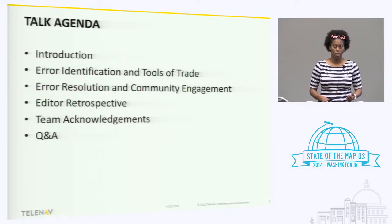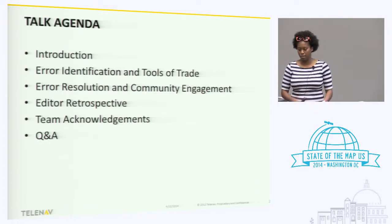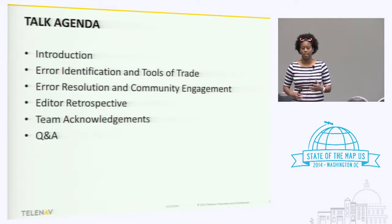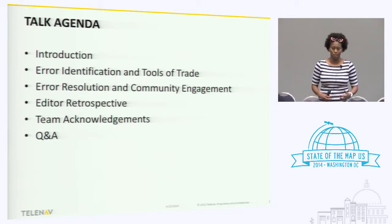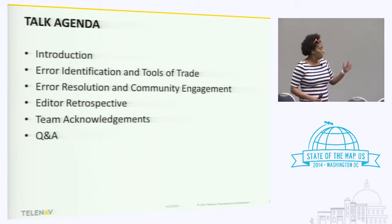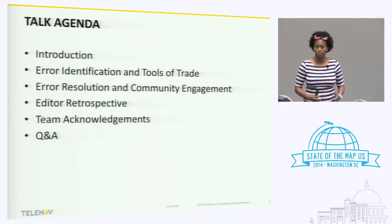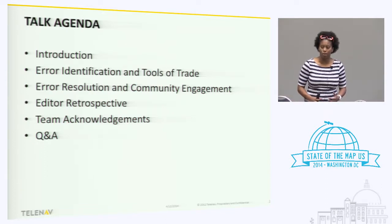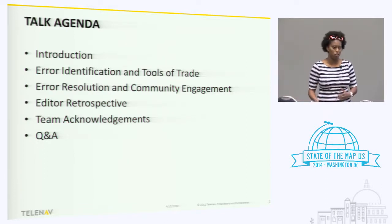Then I'll talk about how we identify errors in OpenStreetMap data with respect to routing and guidance at Telenav — the tools we use — and then segue into a discussion on the types of cases we encountered with OpenStreetMap data and how we've engaged the community in correcting those errors. A little retrospective of our experiences thus far, and some team acknowledgments and Q&A.